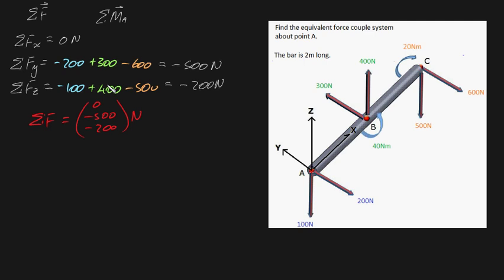Now let's deal with our moment — this is significantly harder. Let's find the sum of moments at point A around the x axis. To do this, let's remind ourselves of the right-hand rule. Get your right hand and put your thumb in the direction of the x axis, curl your fingers around, and by convention this direction is assumed to be positive. So any torque that tends to rotate the bar about the x axis in this direction will be considered positive.